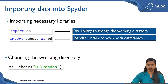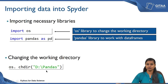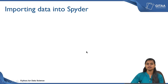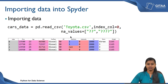Now we have imported the necessary libraries. To change the working directory we use the command os.chdir. Chdir stands for changing directory and inside the command you can just give the path from which you are going to access the data. Now let us import the data into Spyder. We have a data set called Toyota.csv which contains the details of cars.